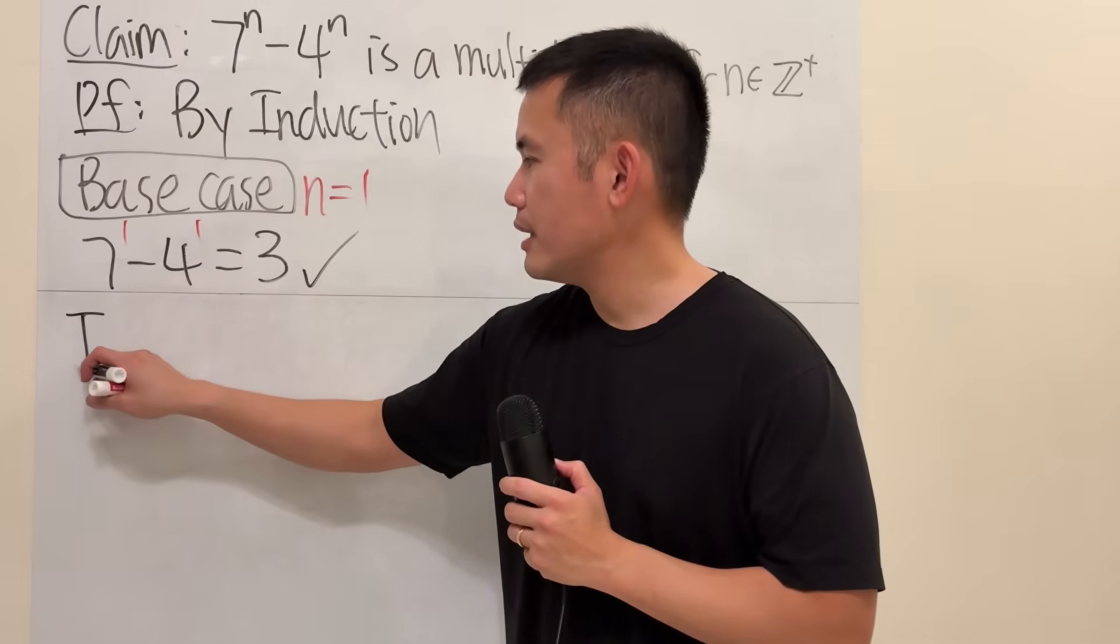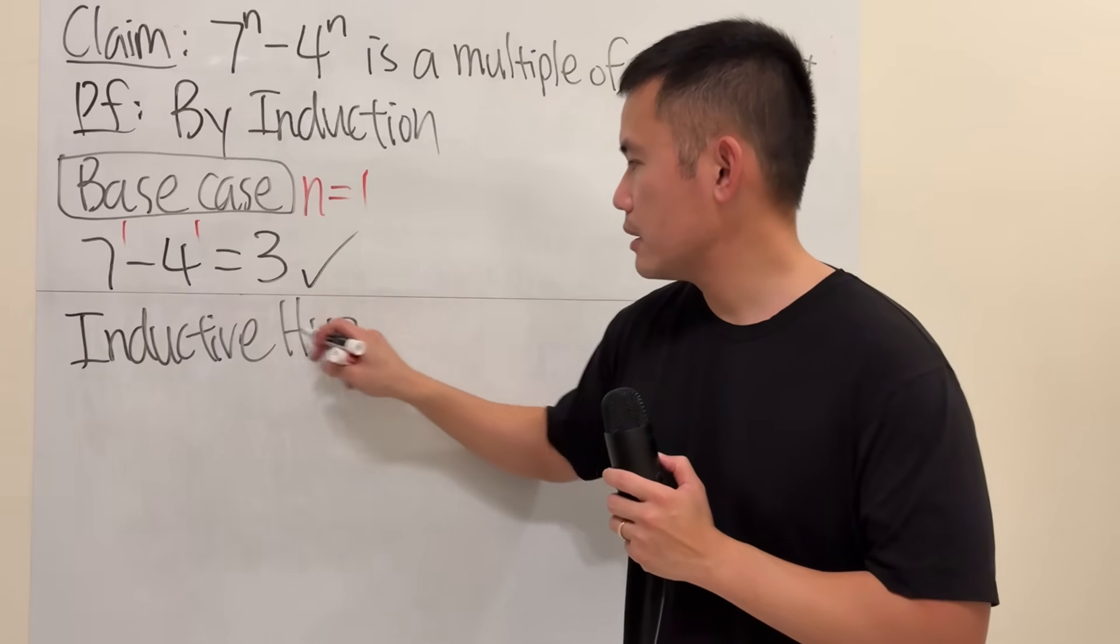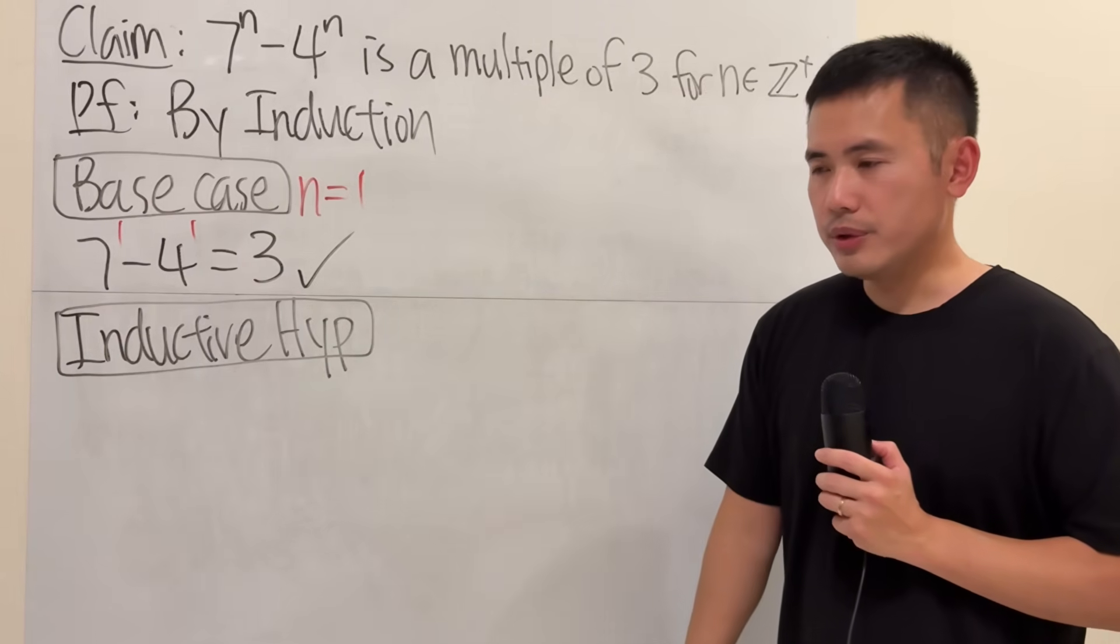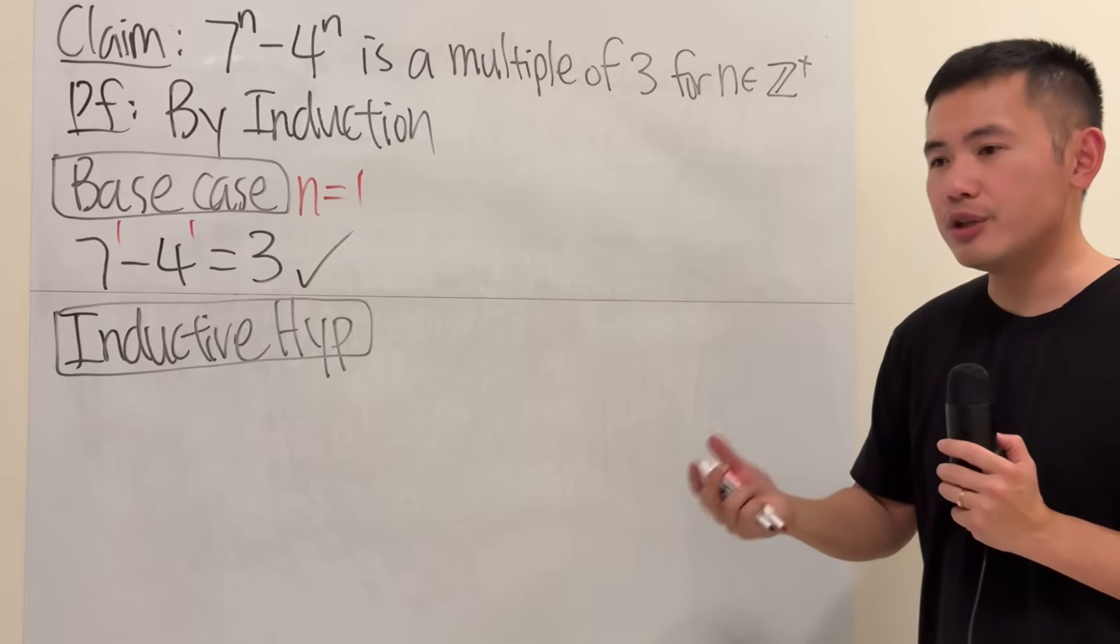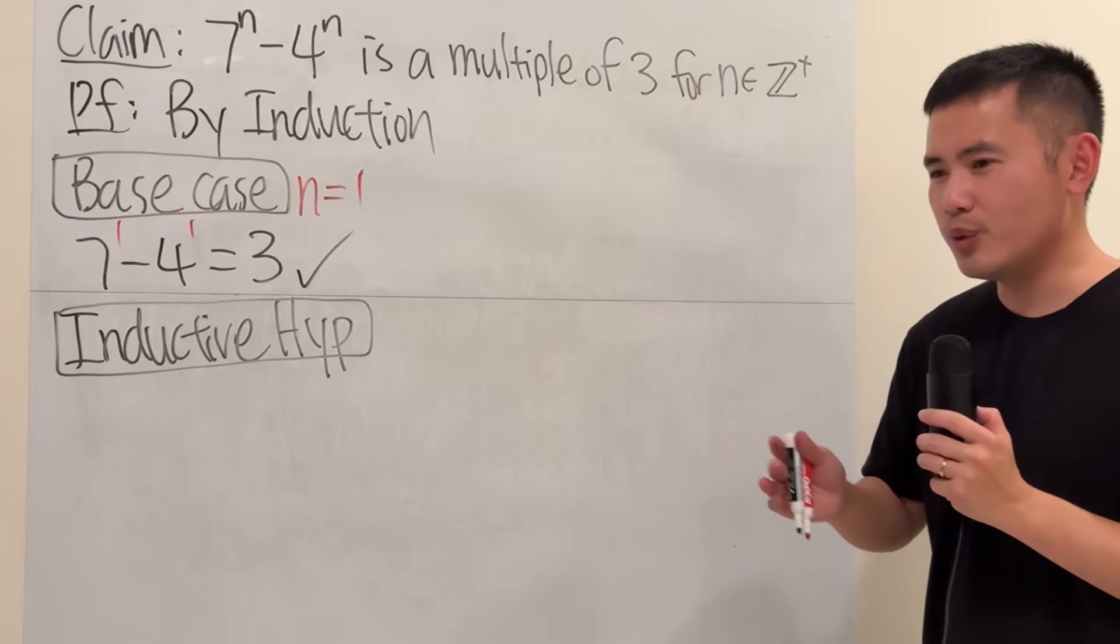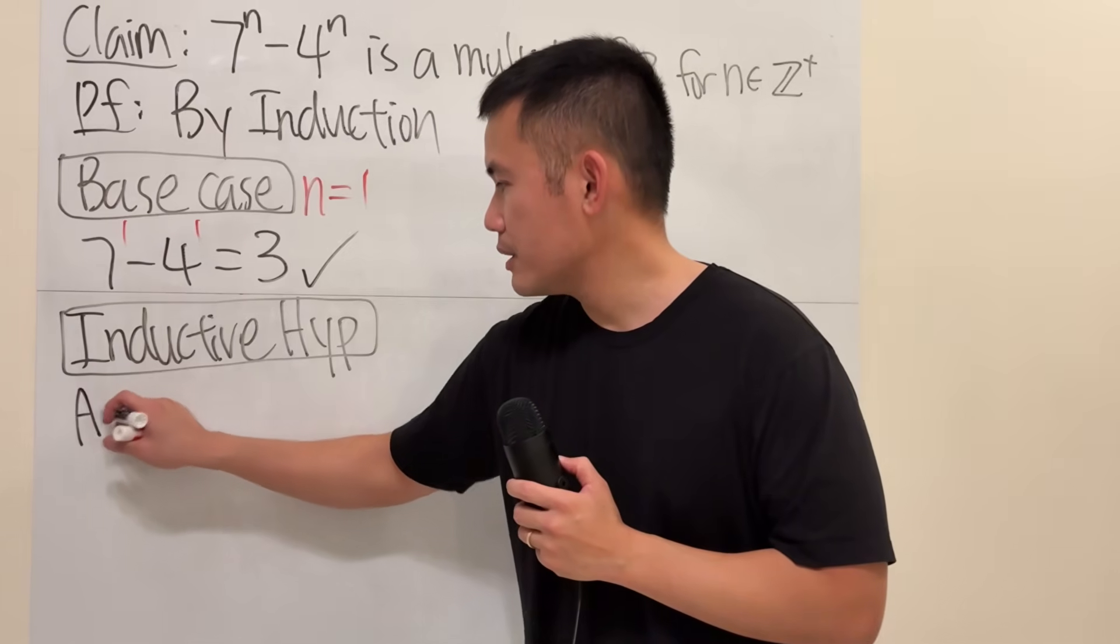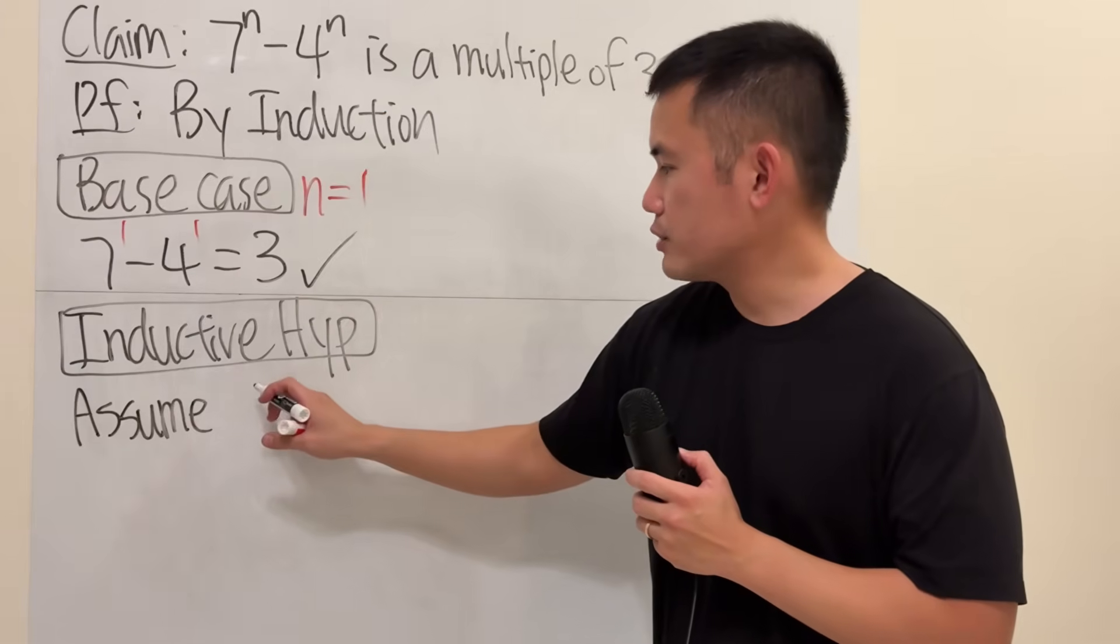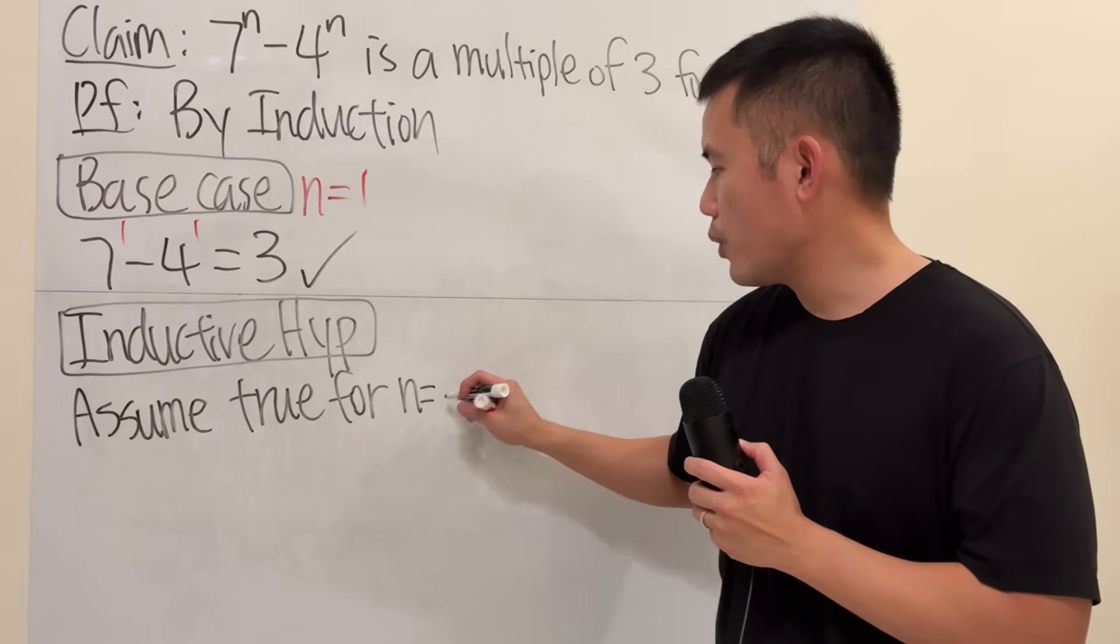Now, the second part is the inductive hypothesis. So what this is going to do is that we are going to assume this is true for some integer. And I'm just going to use a variable for it, because it's like any random integer. So let's say k. So I'll just say assume this is true for n equals k.